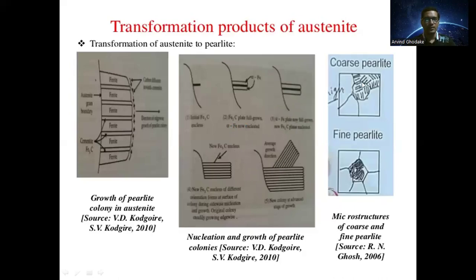Here you can see the microstructure of coarse and fine pearlite. This is called coarse pearlite and this is called fine pearlite. Whenever the intergranular spacing between alpha ferrite and cementite is more, it will be coarse pearlite. If the space is less and the structure is finer, it will be called fine pearlite.